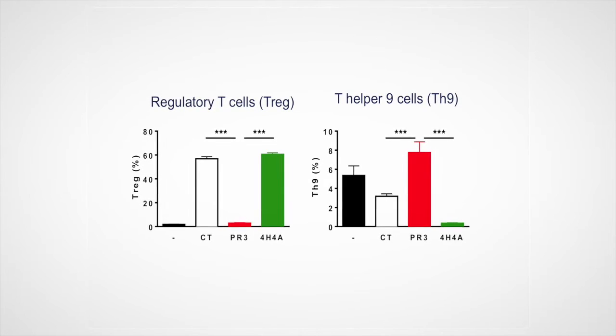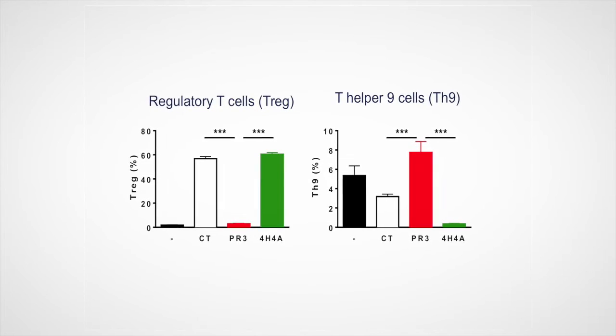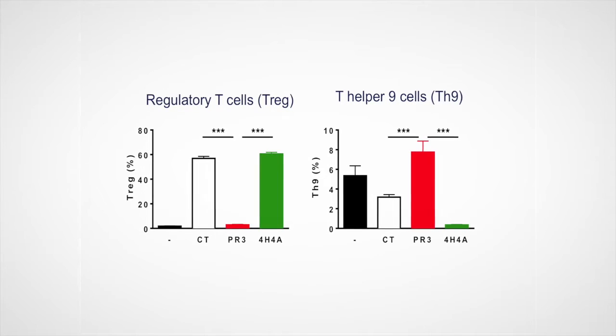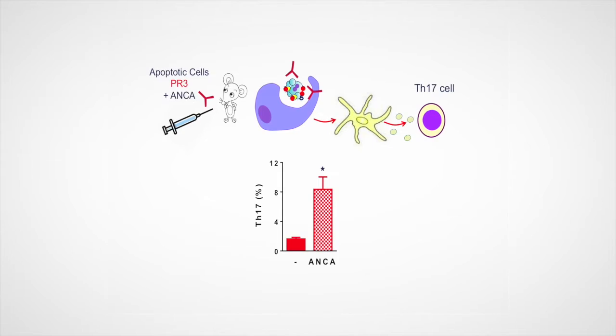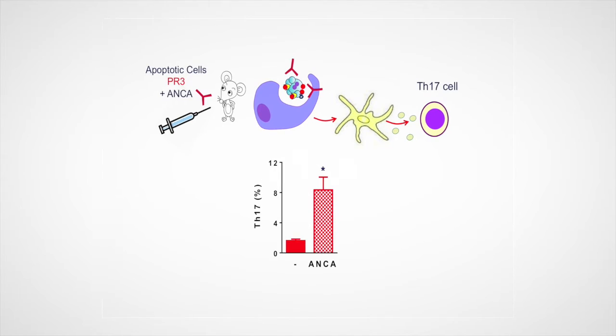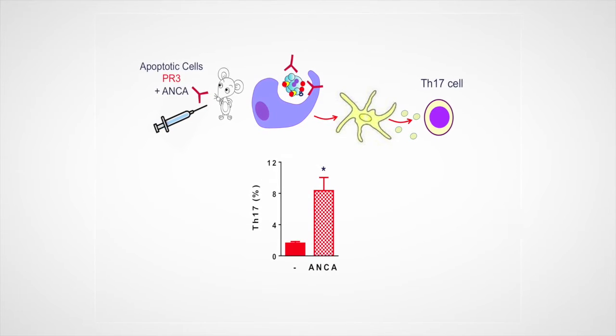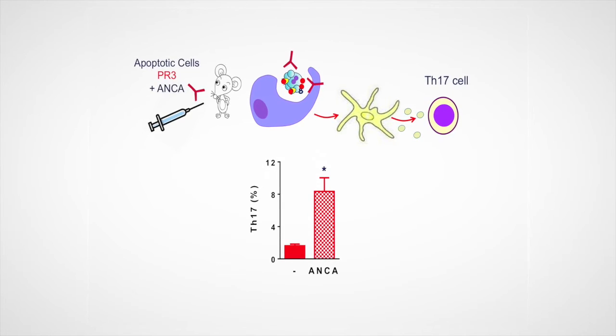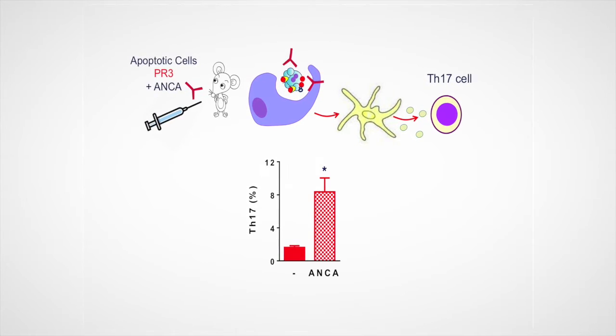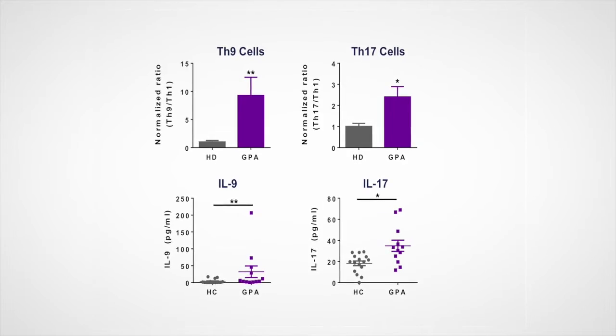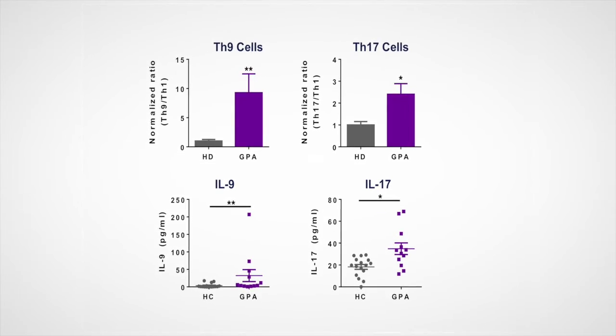PR3 completely blunted the production of regulatory T cells and instead led to increased production of T helper 9 cells. This was not observed when using the membrane mutant. Notably, injection of apoptotic cells expressing PR3 together with anti-PR3 ANCA induced the production of TH17 cells, demonstrating that ANCA can further modulate the immune response to apoptotic cells. The same dysregulation occurs in GPA patients, who have increased TH9 and TH17 cells in their blood, as well as increases in IL-9 and IL-17.